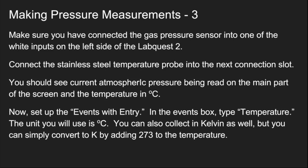Alternatively you can adjust between Kelvin and Celsius simply by adding 273 to the Celsius temperature to get Kelvin or subtracting 273 to go from Kelvin to Celsius.